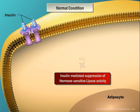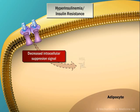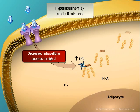Sometimes, for a number of reasons, the intracellular signal following insulin's binding to its receptor is not properly transmitted. As a result of this insulin resistance, the activity of hormone-sensitive lipase is not suppressed. This leads to an increased activity of hormone-sensitive lipase, causing the hydrolysis of triglycerides. When this occurs, glycerol and free fatty acids form as products, and free fatty acids are then eventually released into the circulation.